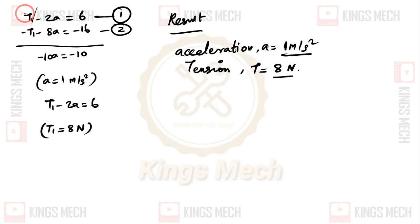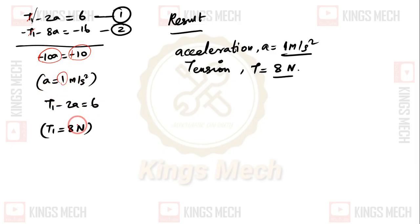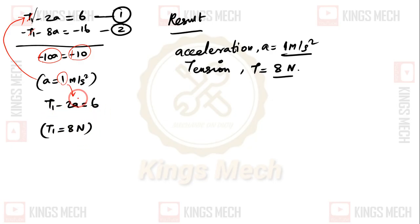Solving the two equations simultaneously: adding Equation 1 (T1 minus 2a equals 6) and Equation 2 (T1 plus 8a equals 16), the T1 terms cancel and we get 10a equals 10, so acceleration a equals 1 metre per second squared. Substituting back into Equation 1: T1 minus 2(1) equals 6, giving T1 equals 8 Newton. We have found the acceleration and tension.